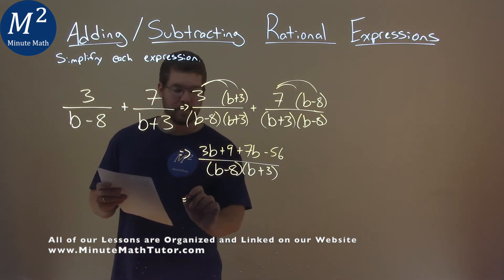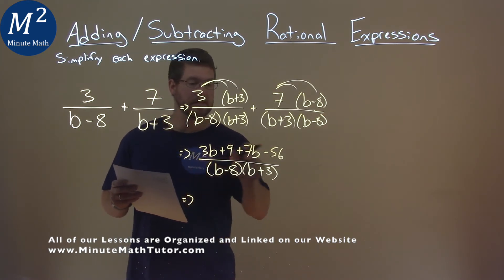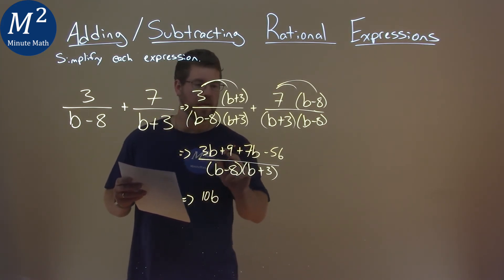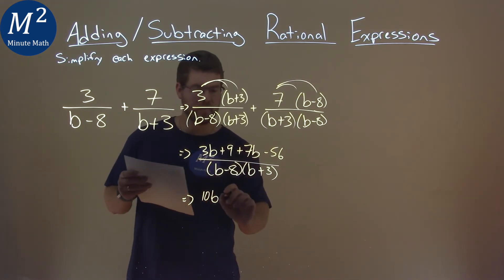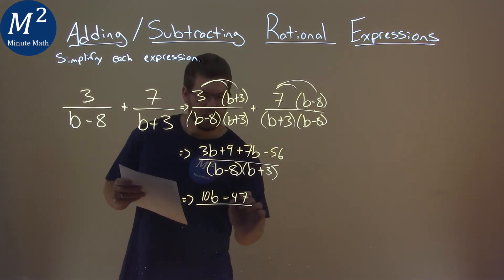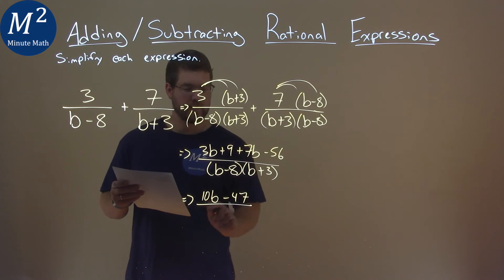From there, we want to combine our like terms. 3b and 7b is 10b. 9 minus 56 is minus 47. And we put that over our same denominator: b minus 8 and b plus 3.